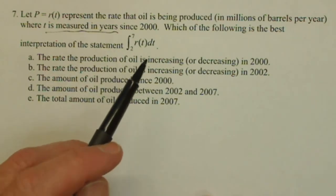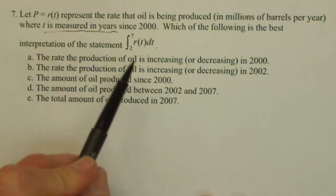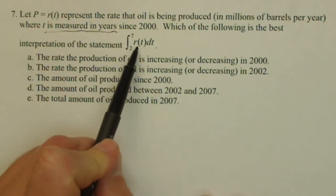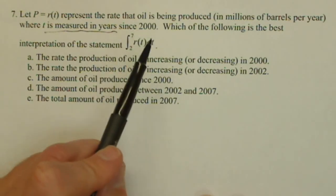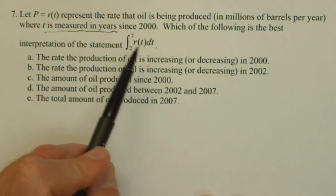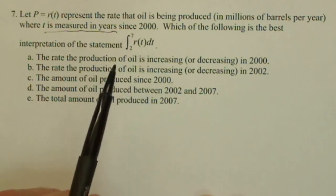Right away that might be enough for us to get the answer, but let's talk about the units. r of t is measured in millions of barrels per year. dt is measured in years, so multiplying those two together is going to give us millions of barrels. The output of this definite integral is going to be how many millions of barrels were produced between 2002 and 2007.